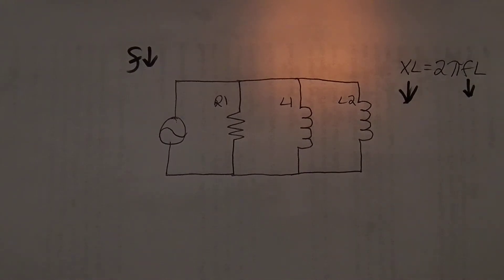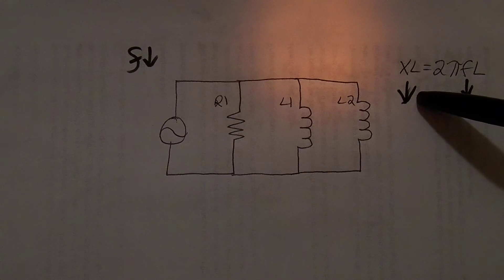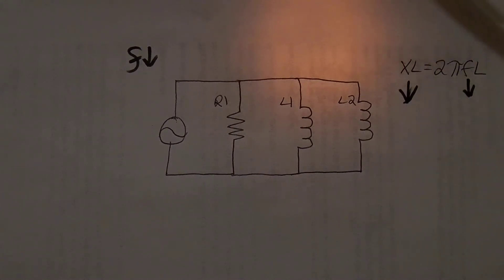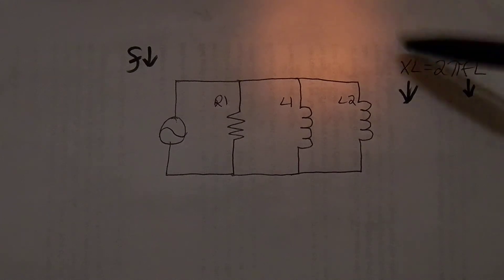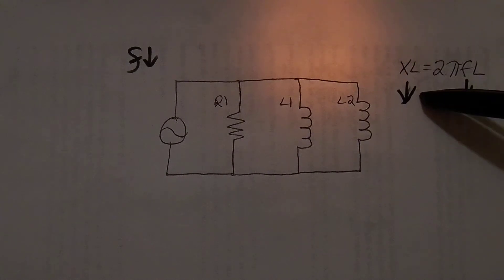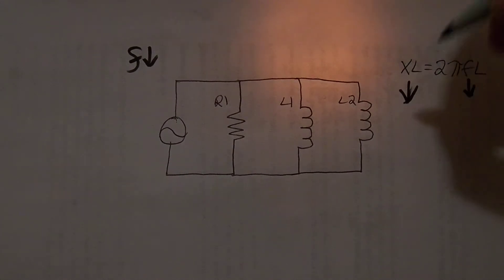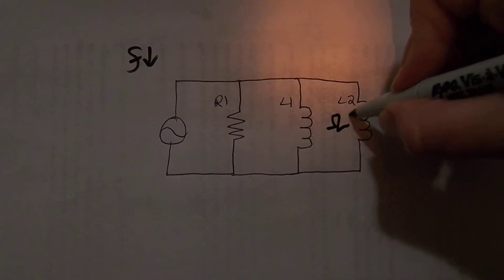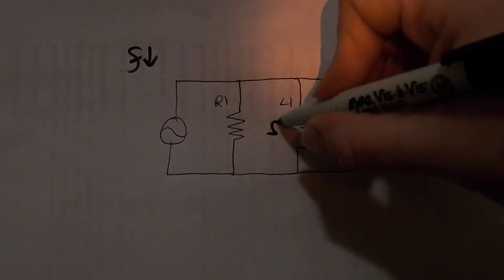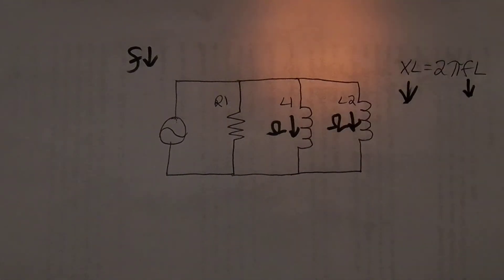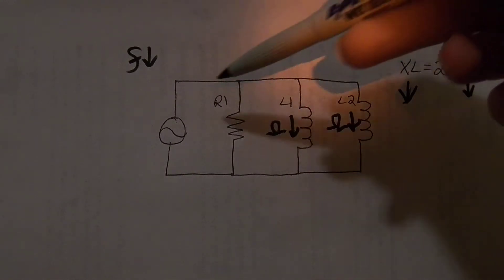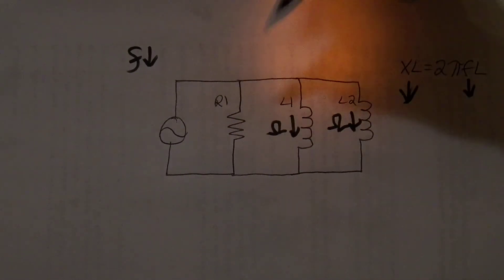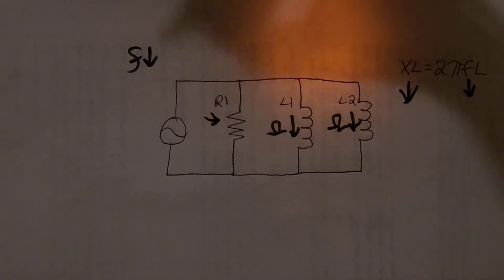Frequency goes down, inductive reactance goes down — straight multiplication formula, put a smaller number in and you get a smaller number out. If inductive reactance goes down, then the ohmic values in those two inductive branches are going down. But frequency does not affect my resistor, which means resistance is staying the same.